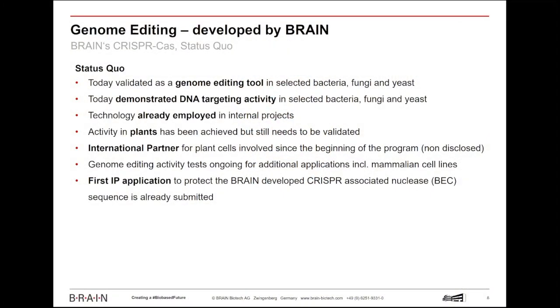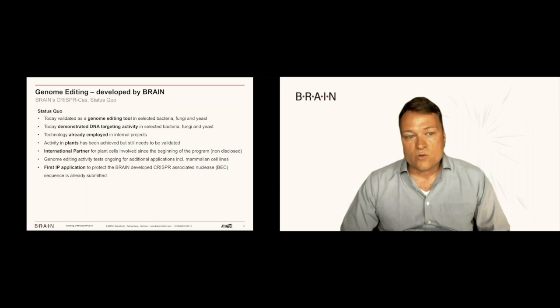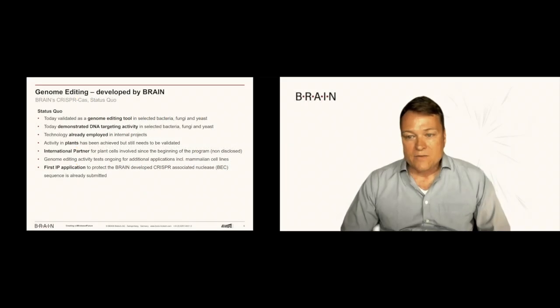What is the status quo today? The status quo is that that tool already is validated for genome editing in selected bacteria, fungi, and yeast, i.e. micro-organisms. And micro-organisms is what Brain is about. So in industrial biotechnology, we produce, for example, enzymes on micro-organisms. Being able to modify these micro-organisms is very much in the DNA of Brain and what our whole business is about. So that gives us some great operational advantages. Secondly, we have already proven activity in plants. We have done that together with a partner, but that activity still needs to be validated. Last but not least, right now we are exploring to what extent that technology also works in mammalian cell lines or human cell lines. And if you can prove that that technology works here as well, then we would open up quite a big field for licensing technology because then it would also work in diagnostics and pharma.